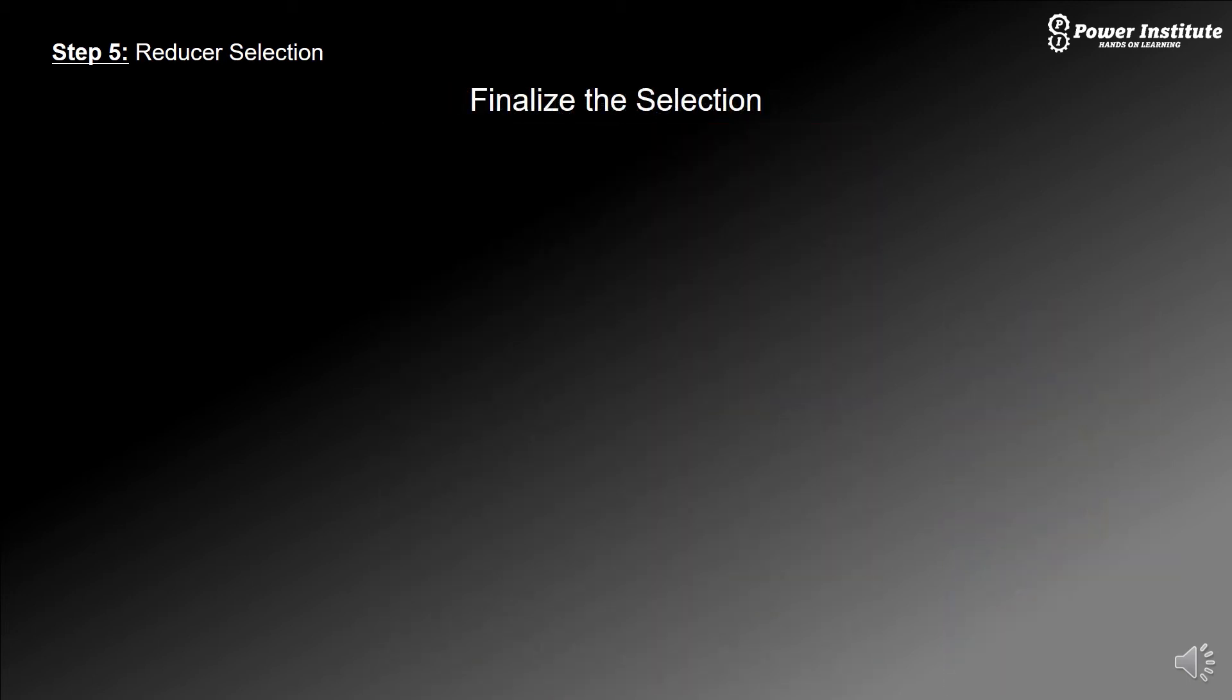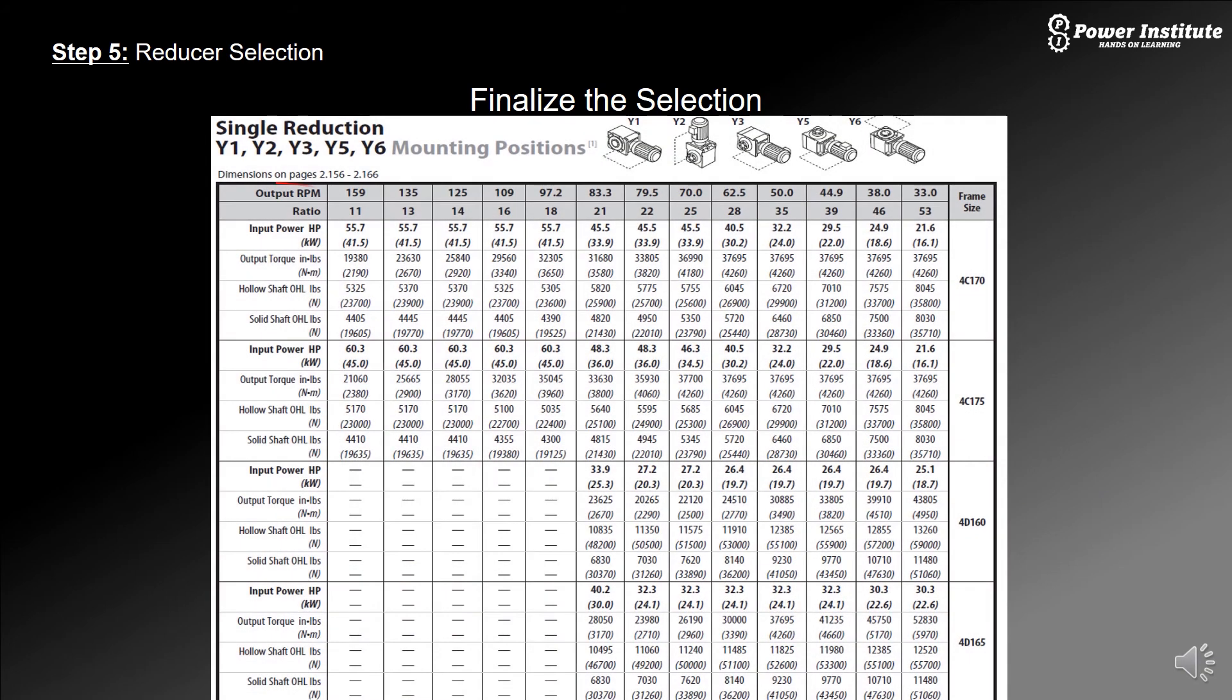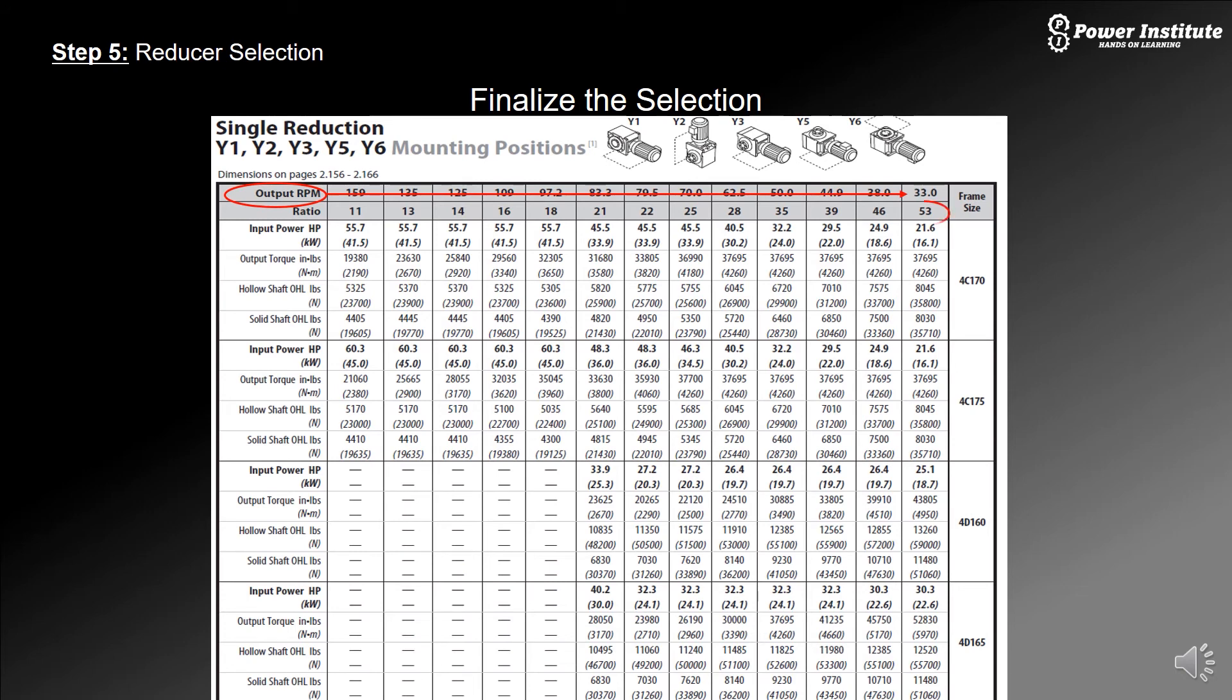We'll finalize the selection. So we go to our catalog here. We take our output RPM, we needed 33. With that, that gives us a 53 to one ratio. We go down until we get to the minimum 28.75 horsepower that we needed. This other one up here was 25.1 and that's a little low. So we want to go down to the next size up to be able to get the horsepower that we need. 30.3 is the selection that we need. And that tells us we need a 4D 165 sized reducer. That gives us enough service factor for the loading, the right RPM and the right torque that we need for the application.